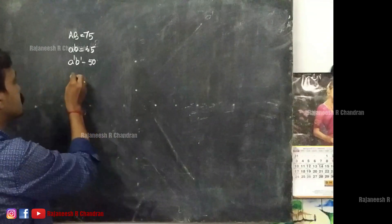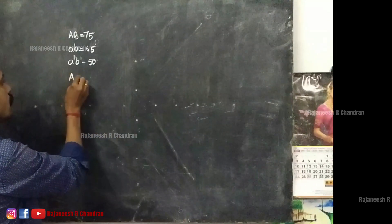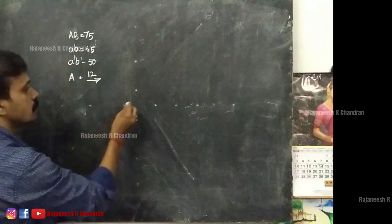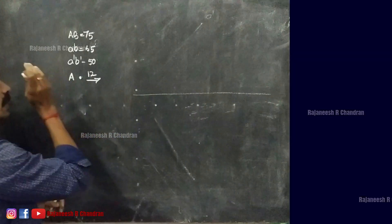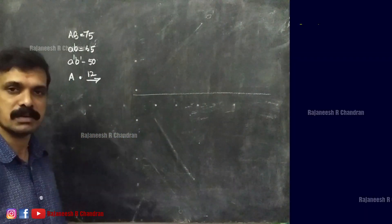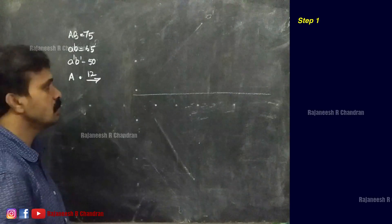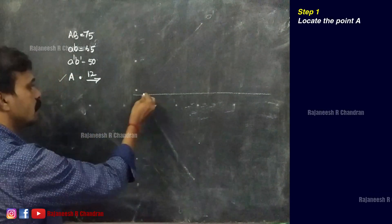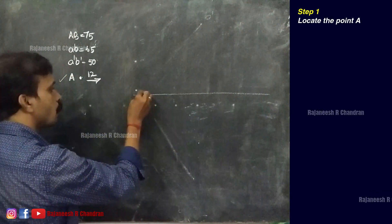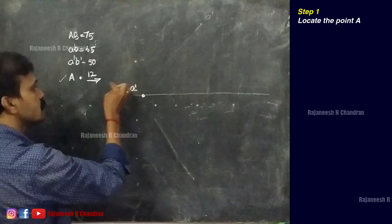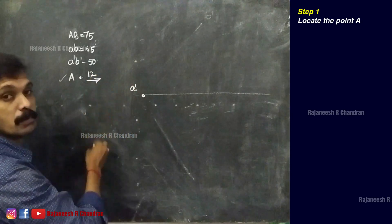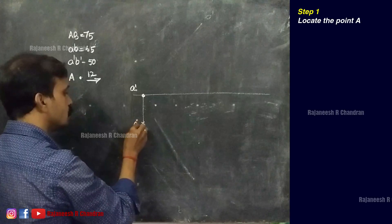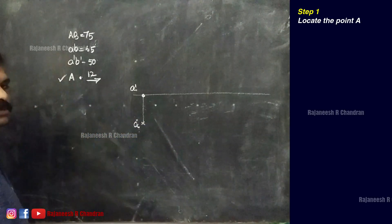Then point A is on HP and 12mm in front of VP. So this is the data given. We can start with point A. Since point A is on HP, this will be A', and 12mm in front of VP, this will be A.